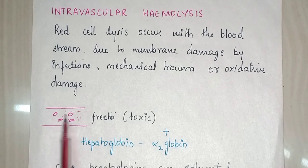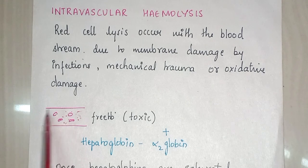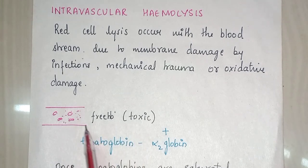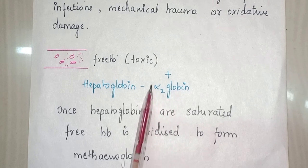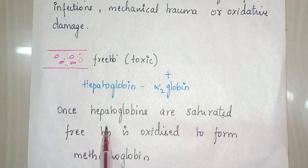Whenever there is breakage or trauma to the cell membrane of RBCs, free hemoglobin is released into the vessels. Free hemoglobin is toxic to us. So there are proteins such as haptoglobin — also called alpha-2-globulin — which take up this free hemoglobin and bind together. Once all the haptoglobins are saturated, what happens next?